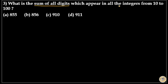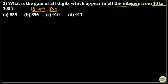What is the sum of all digits which appear in all the integers from 10 to 100? We need to find the sum of all digits from 10 to 99 and 100. Here, 10 to 99 are all two-digit numbers and 100 is a three-digit number; the sum of digits of 100 is 1. First, I will find the sum of unit place digits from 10 to 99, then the sum of tens place digits from 10 to 99, and then add 1 for 100.